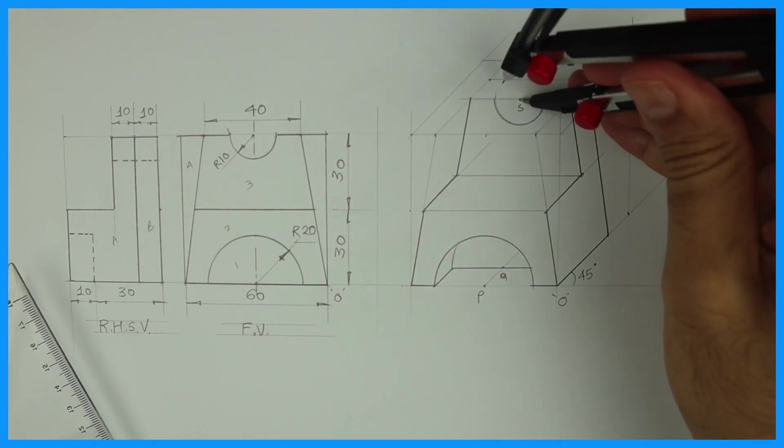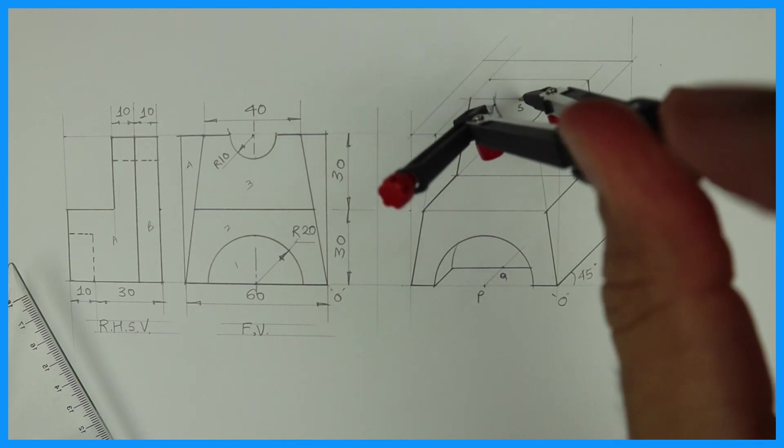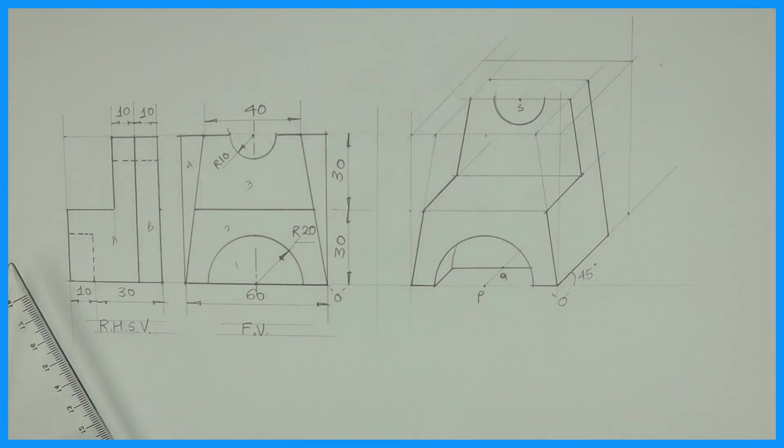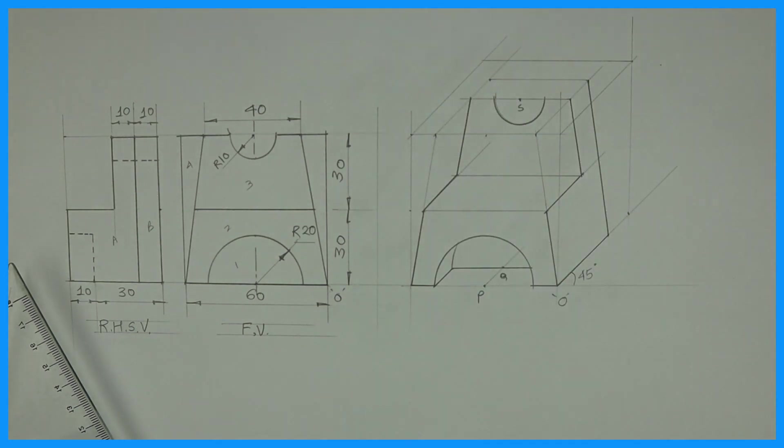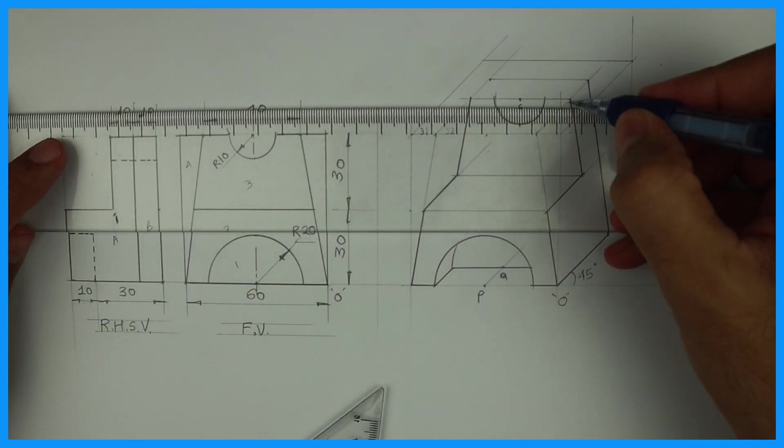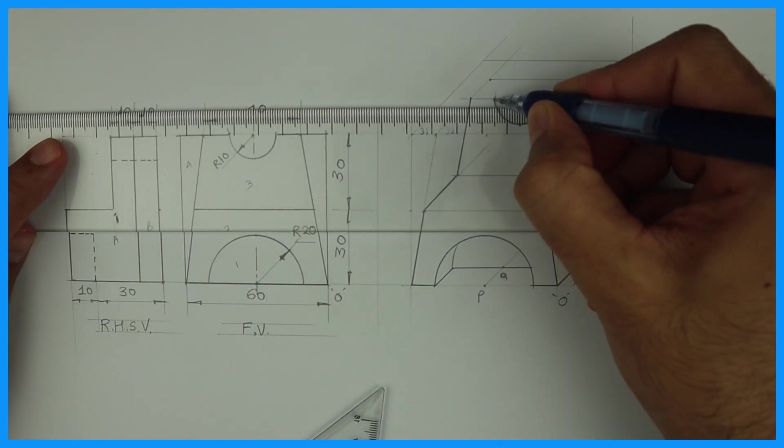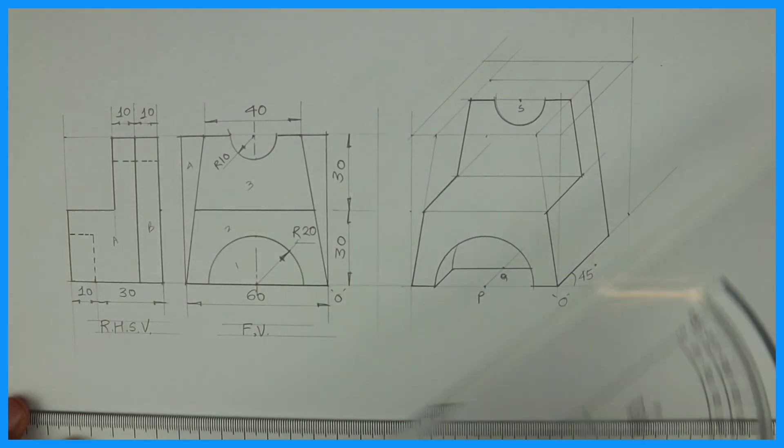From S, we will draw radius. And we will take that point behind by 20. Like in previous case, we went behind by 10 and we drew the same circle. In this also, we will do the same thing. After drawing the semicircle from point S, take that point S behind by 20. We will take this line also behind by 20.